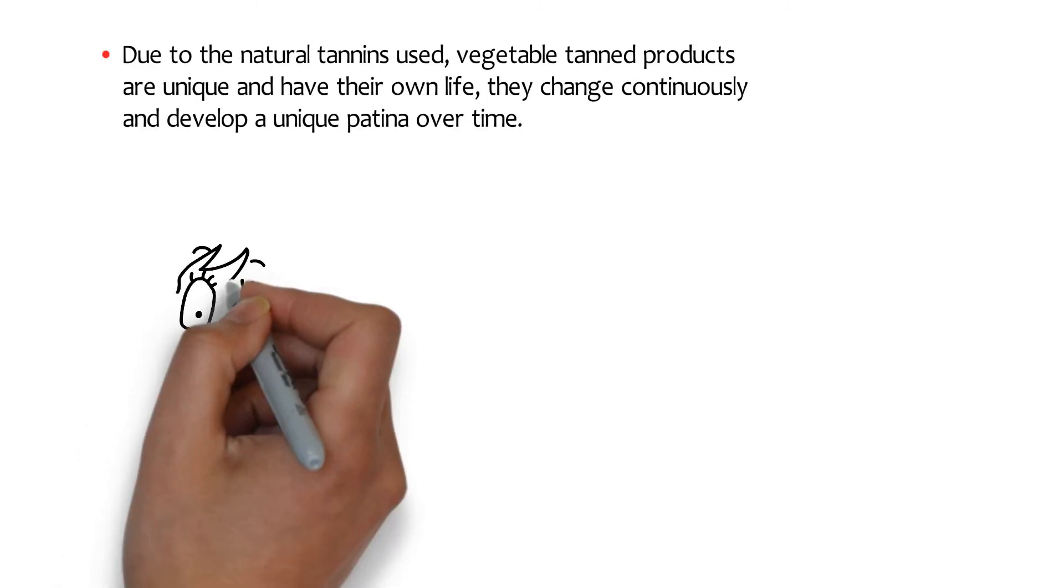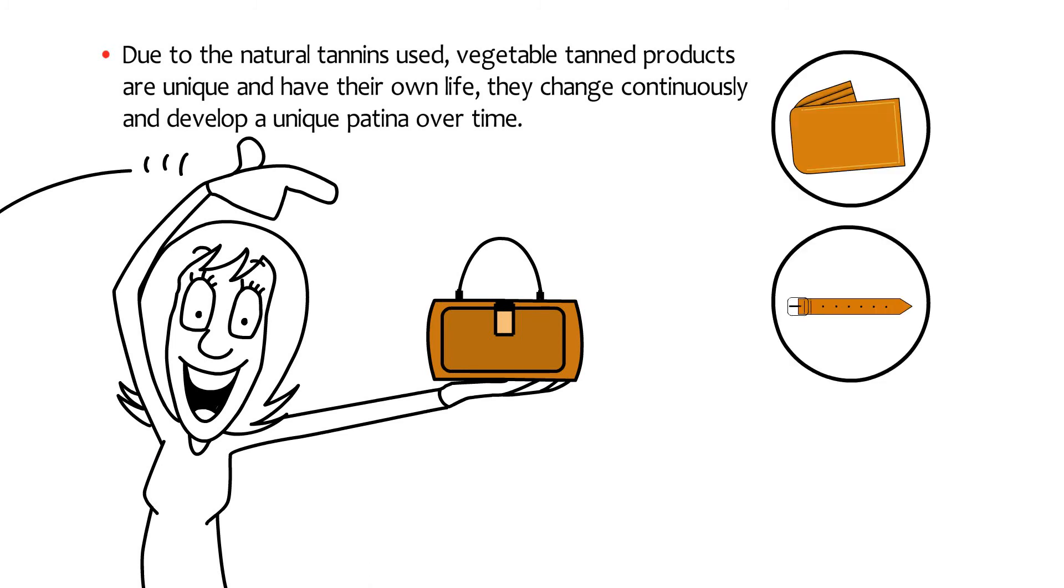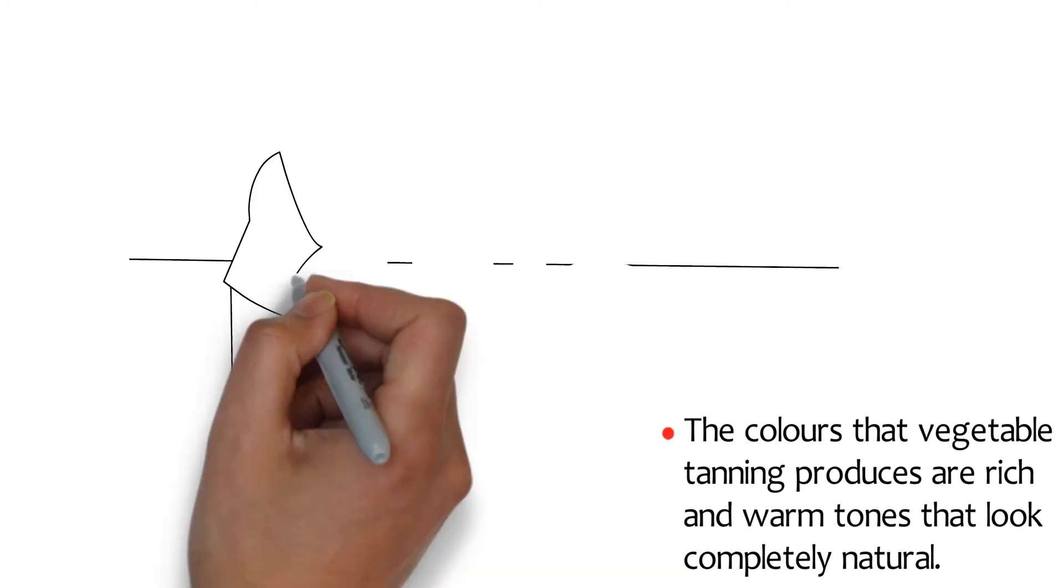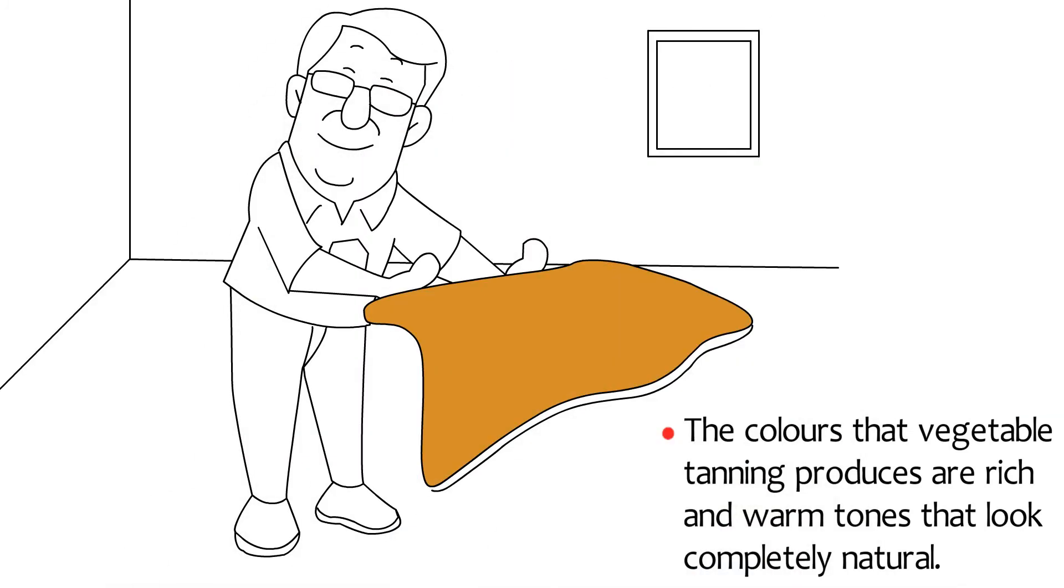Due to the natural tannins used, vegetable tan products are unique and have their own life. They change continuously and develop a unique patina over time. The colors that vegetable tanning produces are rich in warm tones that look completely natural.